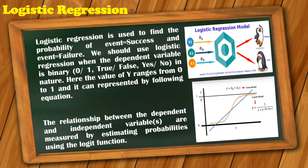The next type is logistic regression. In logistic regression, the dependent variable is binary or categorical in nature — like 0 or 1, yes or no, true or false. In linear regression, the dependent variable should be continuous, but in logistic regression, the dependent variable should be categorical binary. Under this condition, we use logistic regression.